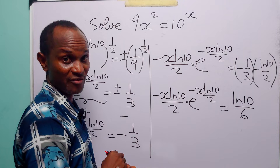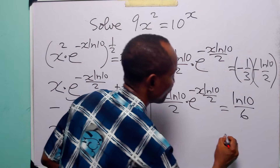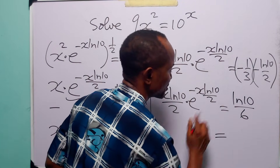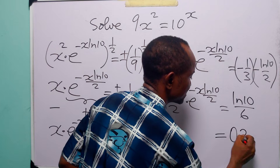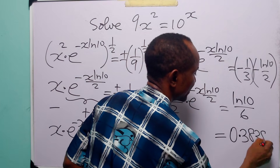Now we can use a calculator to evaluate this. To 4 decimal places, ln 10 over 6 is approximately equal to 0.3838.